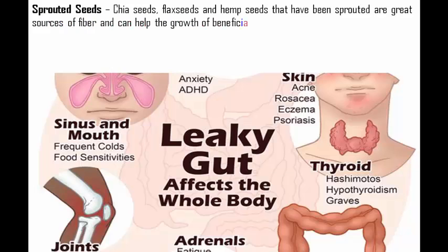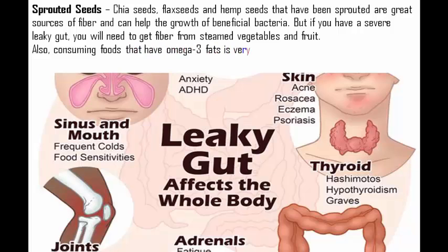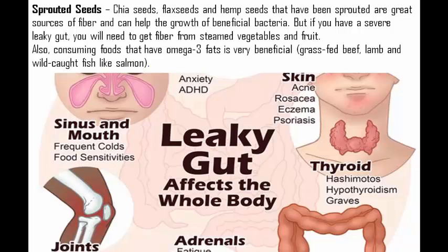Five: sprouted seeds — chia seeds, flax seeds, and hemp seeds that have been sprouted are great sources of fiber and can help the growth of beneficial bacteria. If you have severe leaky gut, get your fiber from steamed vegetables and fruit instead. Also, consuming foods rich in omega-3 fats is very beneficial — grass-fed beef, lamb, and wild-caught fish like salmon are excellent choices.